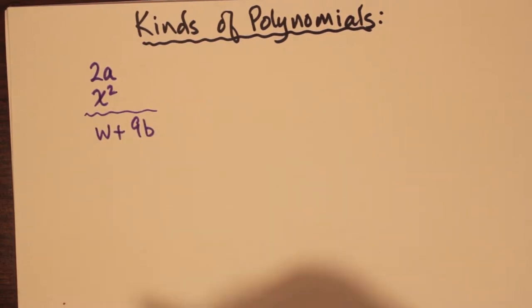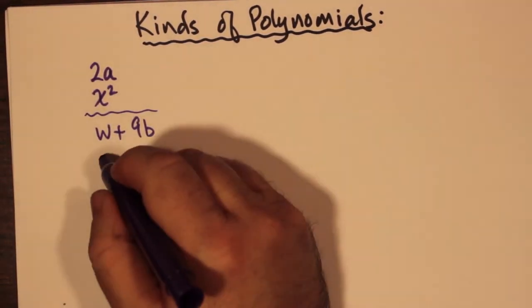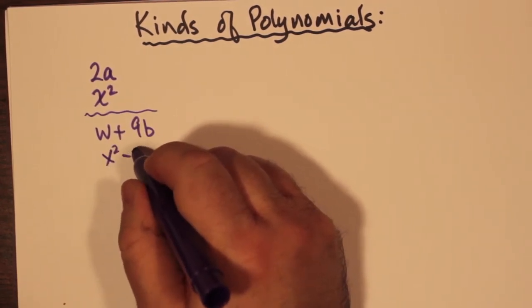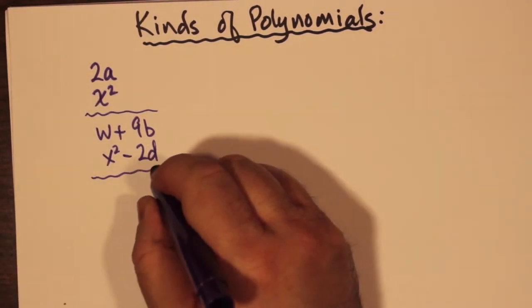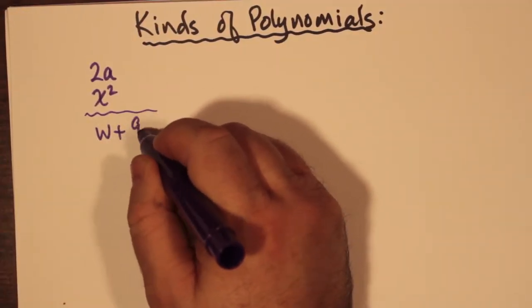The second example is where we have two terms separated by either a plus or a minus sign, and these are called binomials because they consist of two terms. So we have w + 9b, x² - 2d. Sometimes the variables can be squared or raised to any power you wish, and the other term can be a constant or a term with a different variable, or maybe even the same variable as long as it's not the same power. If you cannot reduce these terms any further, they're called binomials—they're irreducible. You cannot combine w + 9b into one term because w and b are different variables.